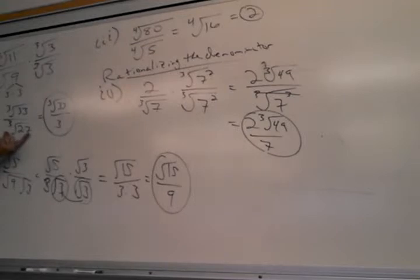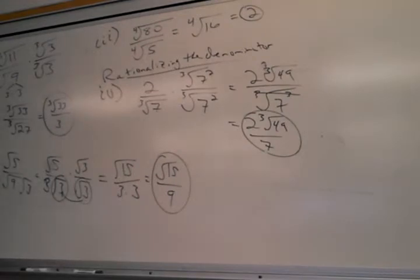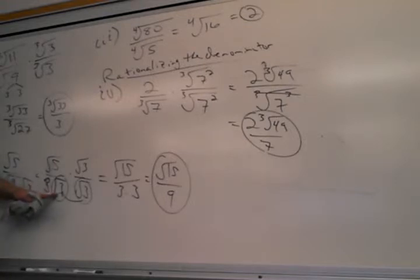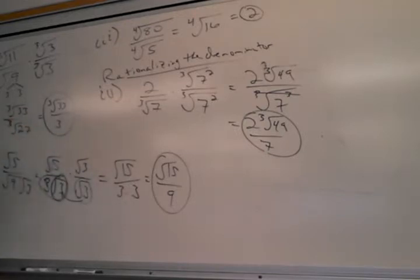That's how you handle it when there's too much already inside: first simplify the radical, pull out the part that's complete, and then identify what still needs to be rationalized. You know you're not done until the bottom is a nice whole number with no radicals. If you stop with a radical still in the denominator you'll lose most of the points, because the instructions say 'rationalize the denominator.'